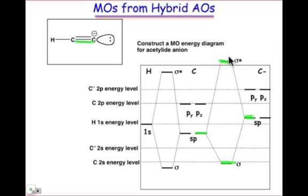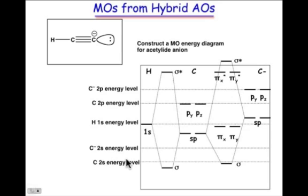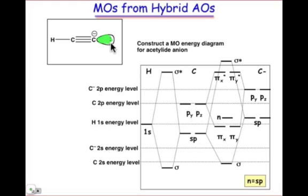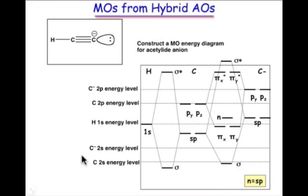Notice the sigma-star energy is higher — it's pushed up by the high energy of the negatively charged sp orbital. There are four pi orbitals: two bonding and two antibonding, resulting from interactions of the 2p orbitals on the neutral carbon and the 2p orbitals on the negatively charged carbon. The lone pair sits in an sp hybridized orbital on the negatively charged carbon. It's a non-bonding orbital, so it doesn't change its energy — it has exactly the same energy as the sp hybrid atomic orbital.